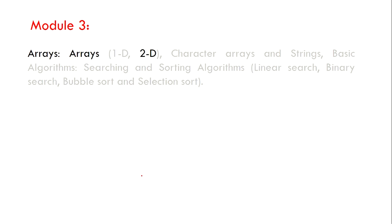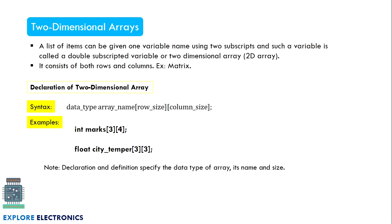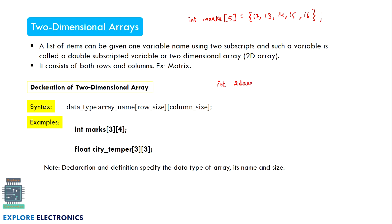Hello everyone, welcome back to Explore Electronics. Today let's see what two-dimensional arrays and multi-dimensional arrays are. Unlike a one-dimensional array — for example, int marks[5] with five values — a one-dimensional array only has column values and no multiple rows, which is why it is called a one-dimensional array.